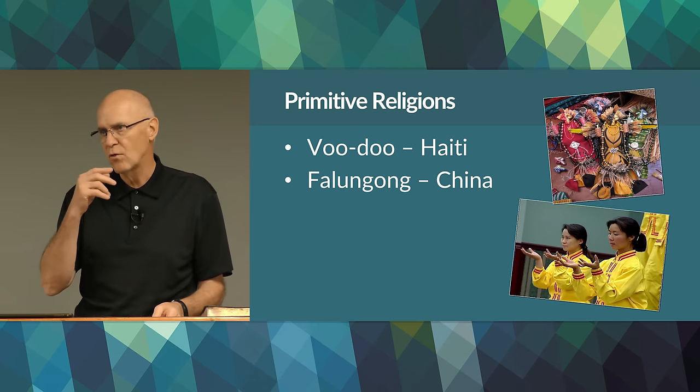Originally Islam was spread through military means. Different groups within Islam often conflict with each other — the Sunnis, Shiites, Sufis, Baha'i, Black Muslims, and Nation of Islam. Much of the fighting today is between Sunnis and Shiites over the true inheritor of Muhammad's authority — that's what the conflict is ultimately about.